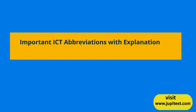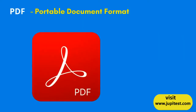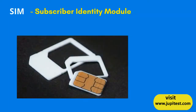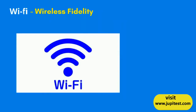Important ICT Abbreviations with Explanation, presented by Jupitest. PDF: Portable Document Format. SIM: Subscriber Identity Module. Wi-Fi: Wireless Fidelity. Google: